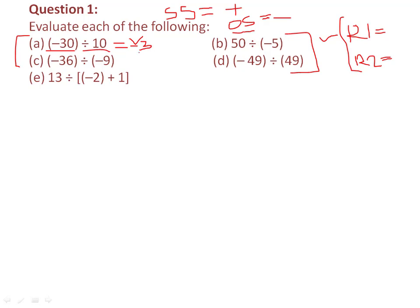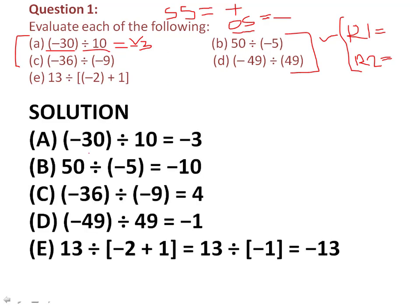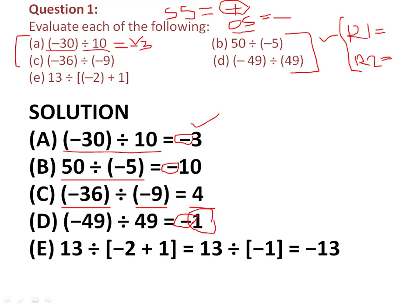I have solved one question; the other three parts you have to solve. First, write the sign — two numbers with opposite signs give a negative result — then divide numerically: 5 tens are 50, so 10 comes here. For two numbers with the same sign, the result is positive: nine fours are 36. For 49 divided by 49, opposite signs give a negative result and the absolute value is 1.